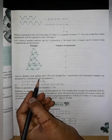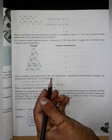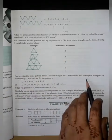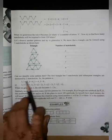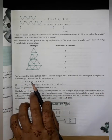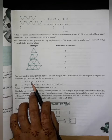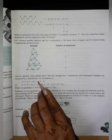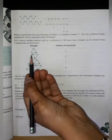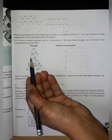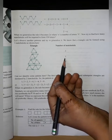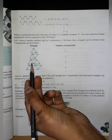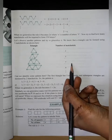Can we identify some pattern here? We can use a pattern here. The first triangle has three matchsticks. And subsequent triangles are increased by two matchsticks. When we apply the triangle and apply, then we have two matchsticks increased.